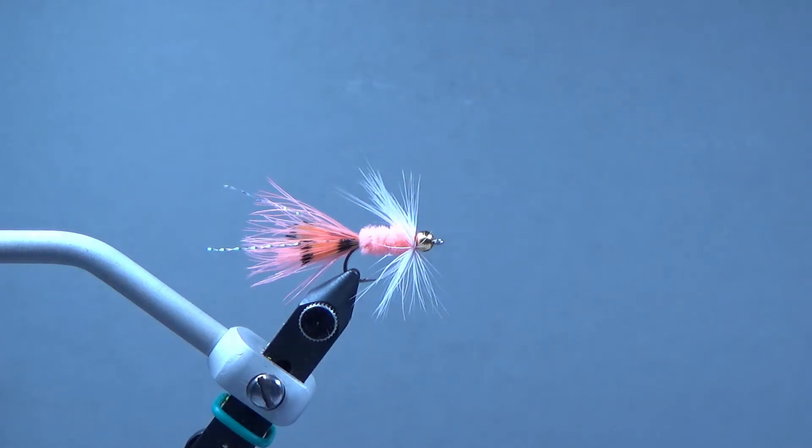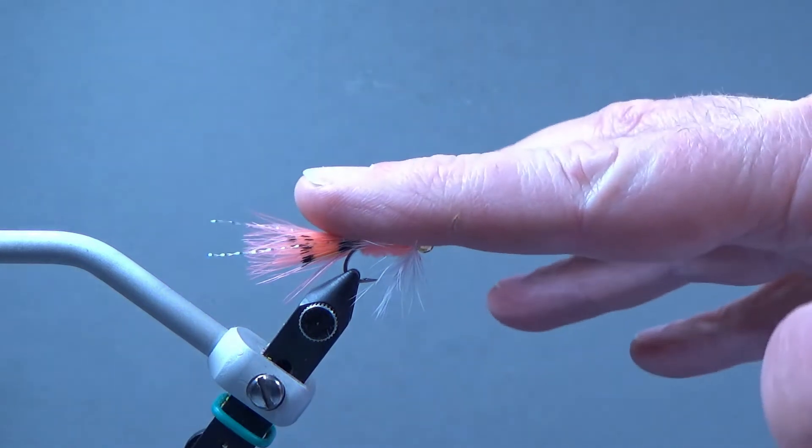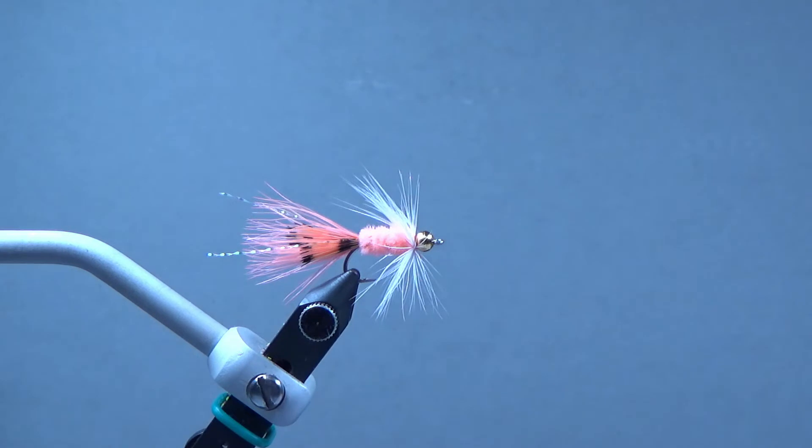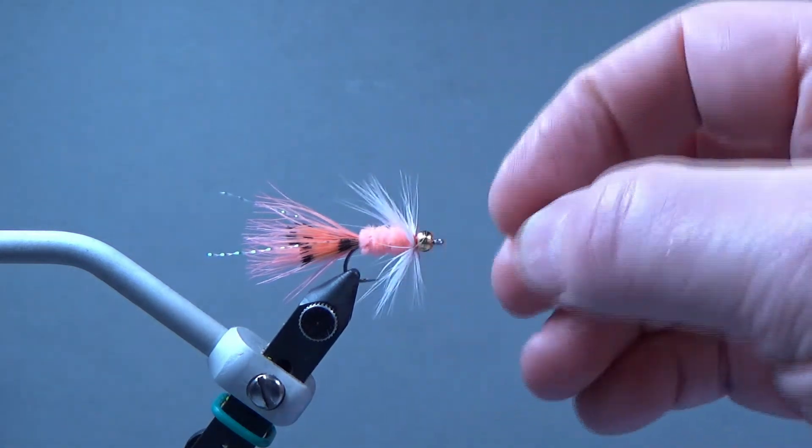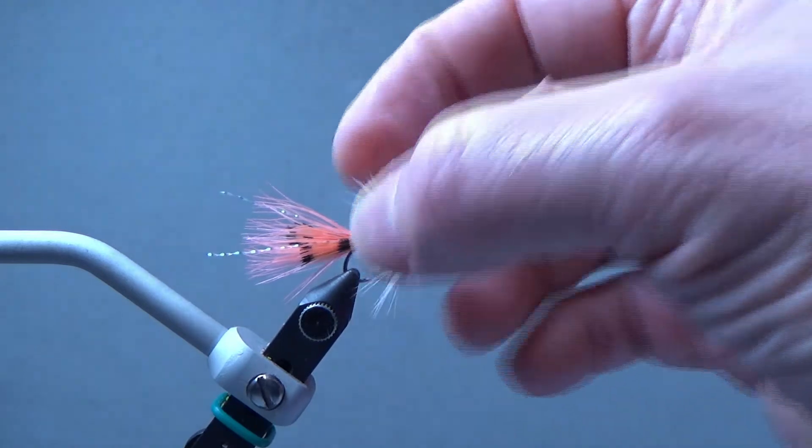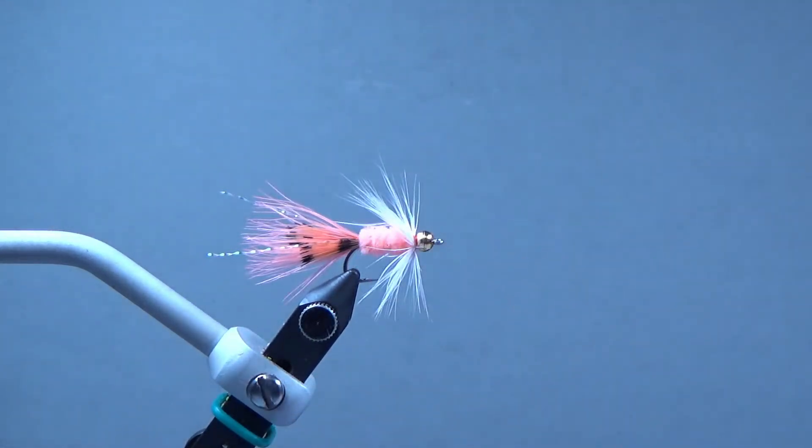And there we have the squimp. This is actually a squimp variation, this is not the original pattern. Actually calls for a dubbed body of Sanyo laser dub and then it calls for a feather over the back that acts as a carapace. But this is the variation tied by Nick Clayton, who is a very well known saltwater guide in Puget Sound area for sea run cutthroats. And so if this is the way he ties them and he catches fish on them, then I think that's probably a good indication this is a fish catching fly. So go out there and get some.